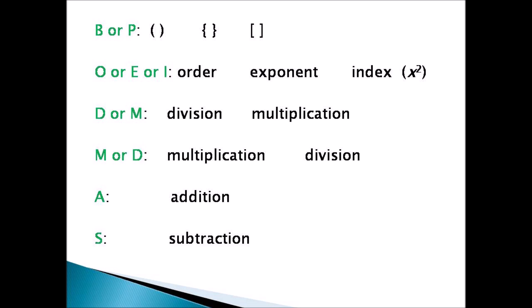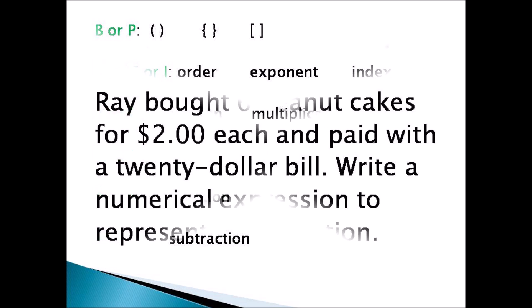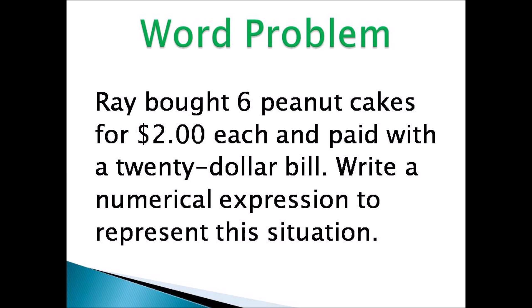We have brackets or parentheses — you can see examples of those. Then you have O, E, or I for orders, exponent, or index. That would include exponents, index form, and also roots. Then D or M for division and multiplication, M or D for multiplication and division, A for addition, S for subtraction. You can add and subtract in any order, but you must do it last.